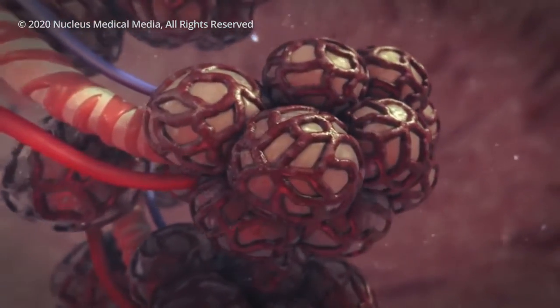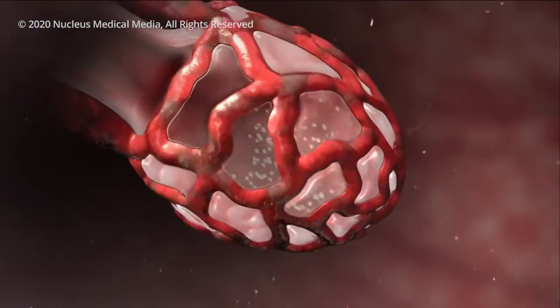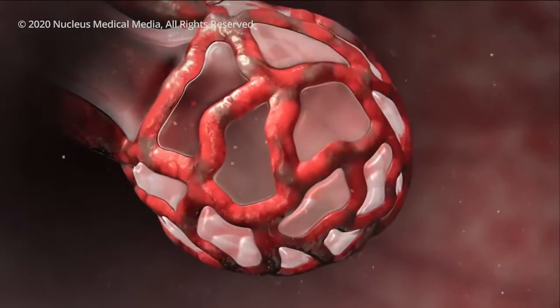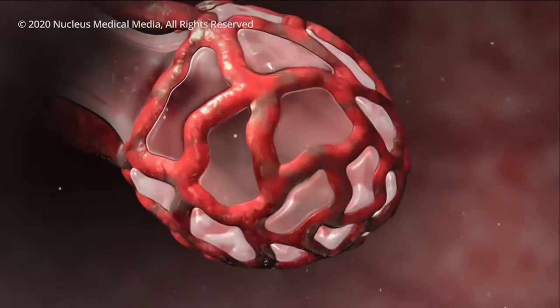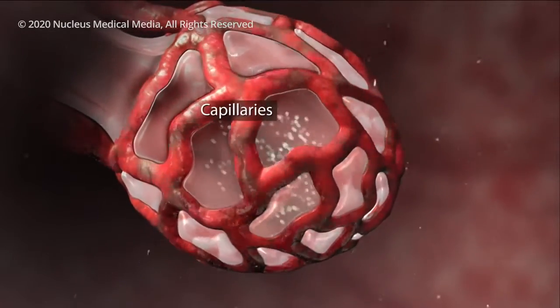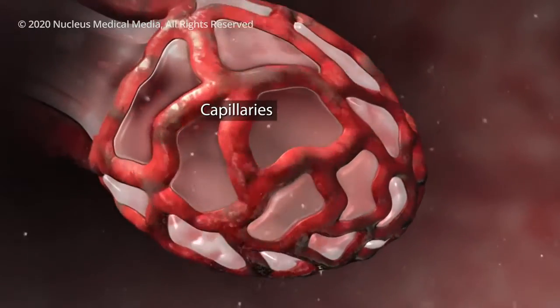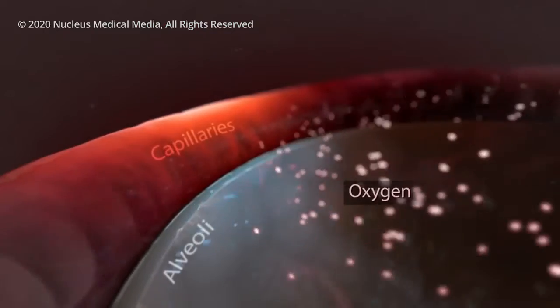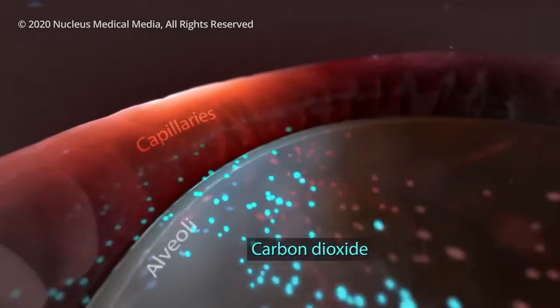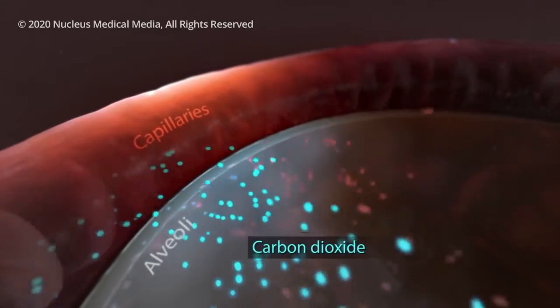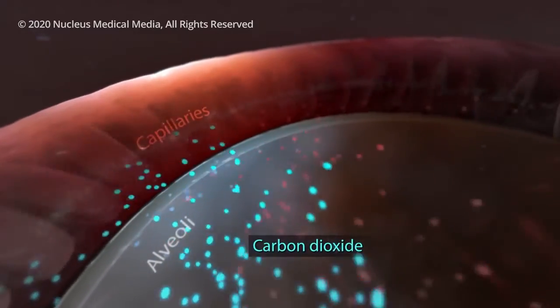Your airways and alveoli are flexible and springy. When you breathe in, each air sac inflates like a small balloon. And when you exhale, the sacs deflate. Small blood vessels called capillaries surround your alveoli. Oxygen from the air you breathe passes into your capillaries, and then carbon dioxide from your body passes out of your capillaries into your alveoli so that your lungs can get rid of it when you exhale.